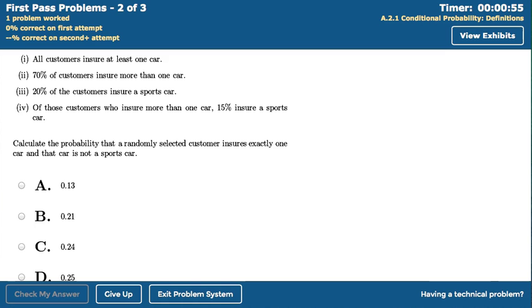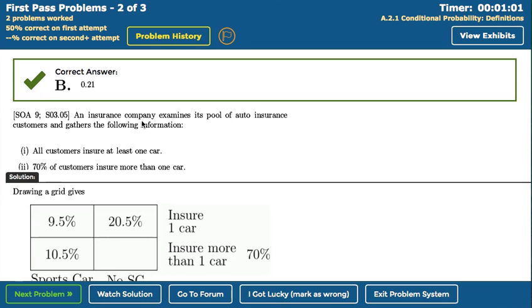Let's try another one. I'm not quite sure how to do this one, so maybe I'll just guess that it's a B. Now, this one we got right, and we see a new option at the bottom of the screen. The I got lucky button is important for you to use to keep from fooling the problem system into thinking that you know how to do this problem when you really didn't. If you guessed right, use that button.